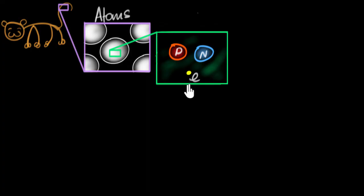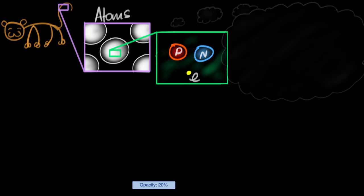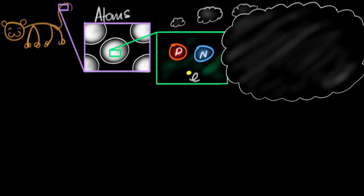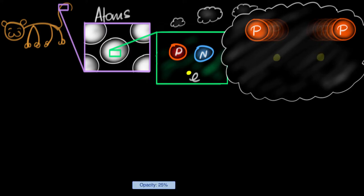And to understand what charge is, let's conduct an experiment in our head involving these particles. So let's do a thought experiment. If we were to keep two protons close to each other, then we would find for some reason, these protons repel each other. They push each other away. Similarly, if you were to keep two electrons close to each other, same thing. They push each other away. They repel each other.